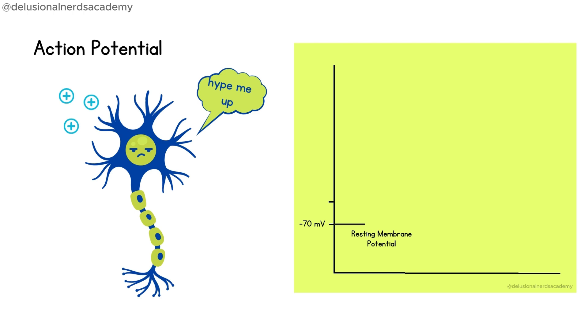This critical level where the neuron agrees to carry the impulse is called a threshold, which is around negative 55 millivolts. If this level is not reached, the potential is called the graded potential, meaning that the neuron is not excited to that extent and it will not conduct the impulse.